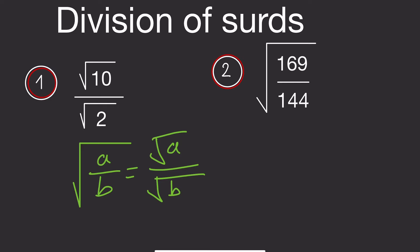We can also move from here to this. It means we can move from one position to another — from this position to this, or from this to this. I will explain this with an example.